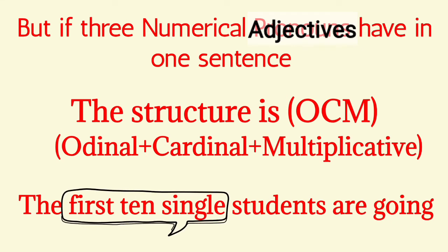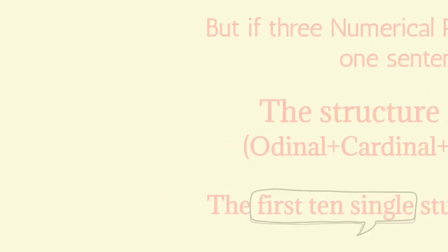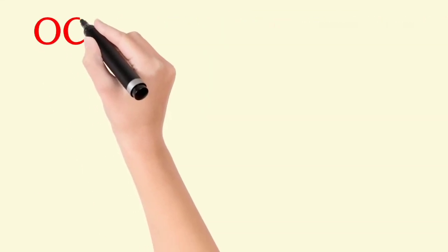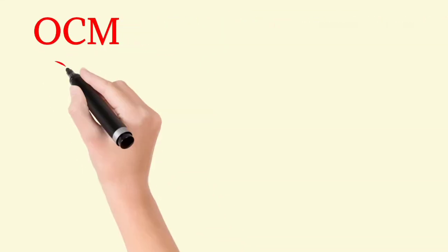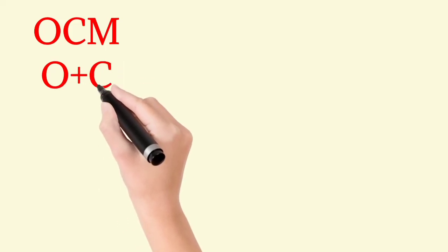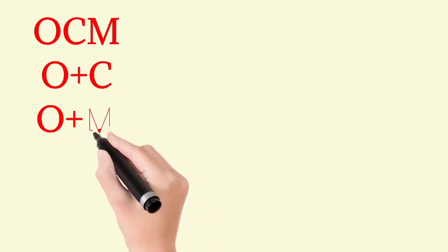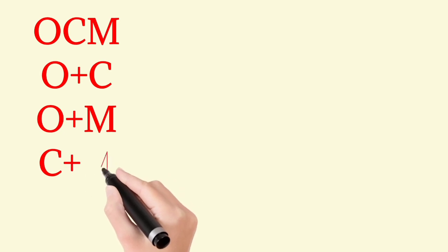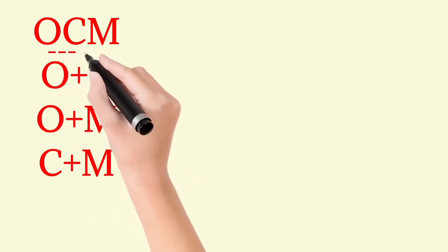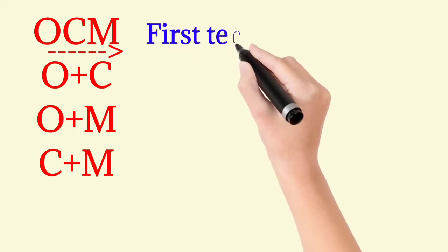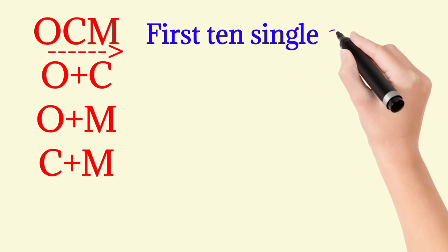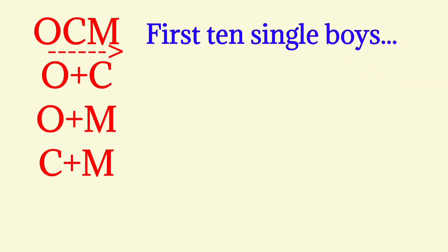In the OCM formula, the order is O plus C plus M, left to right. The verb is plural when the noun is plural. For example: first ten single boys — first is ordinal, ten is cardinal, single is multiplicative. This is the OCM formula applied.